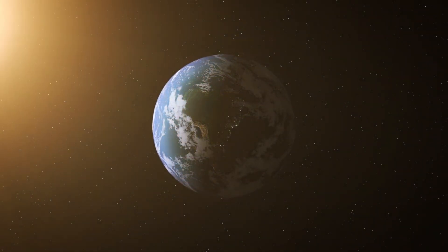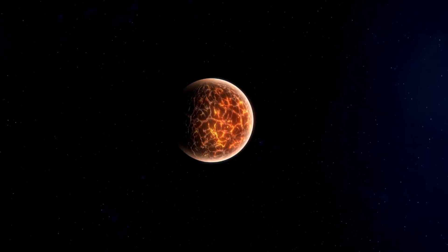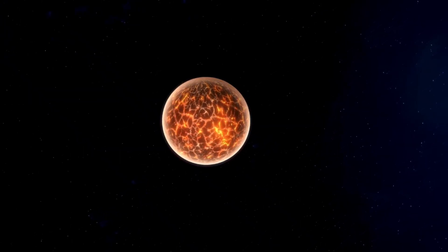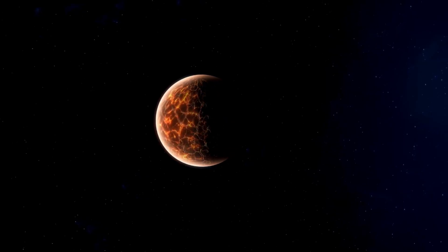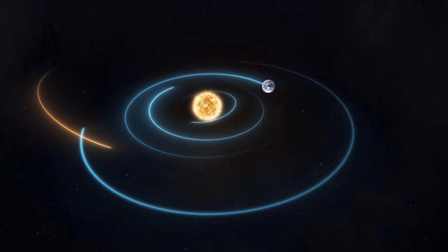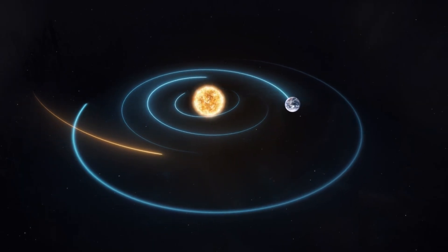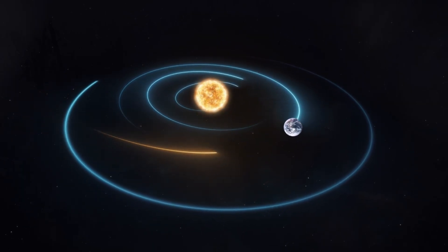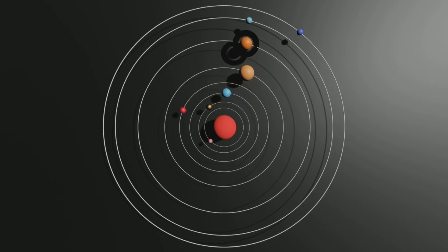For decades, astronomers have tried to find planets like Earth, places with the right mass, size, temperature, and distance from their star to support liquid water and maybe even life. Proxima b has always been among the top candidates. It's close, astronomically speaking, which makes it easier to study.